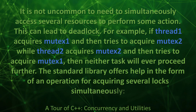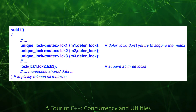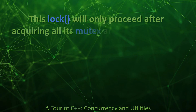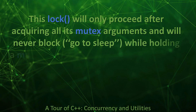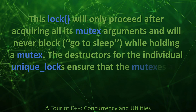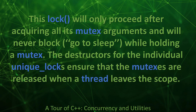The standard library offers help in the form of an operation for acquiring several locks simultaneously. In void f(): unique_lock<mutex> lck1{m1, defer_lock} — don't yet try to acquire the mutex; unique_lock<mutex> lck2{m2, defer_lock}; unique_lock<mutex> lck3{m3, defer_lock}; then lock(lck1, lck2, lck3) — acquire all three locks; manipulate shared data; implicitly release all mutexes. This lock() will only proceed after acquiring all its mutex arguments and will never block while holding a mutex. The destructors for the individual unique_locks ensure that the mutexes are released when a thread leaves the scope.